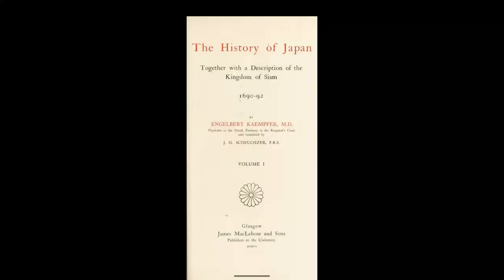The next pillar of our opponents that control everything today — the so-called globalist cabal — we can find a good example of their revisionist element of lying. Rewriting history is one of their primary motives. Here is the History of Japan, together with the description of the Kingdom of Siam, 1690–92, by Engelbert Kempfer, M.D., physician to the Dutch Embassy to the Emperor's Court, translated by J.G. Schutzer, FRS.